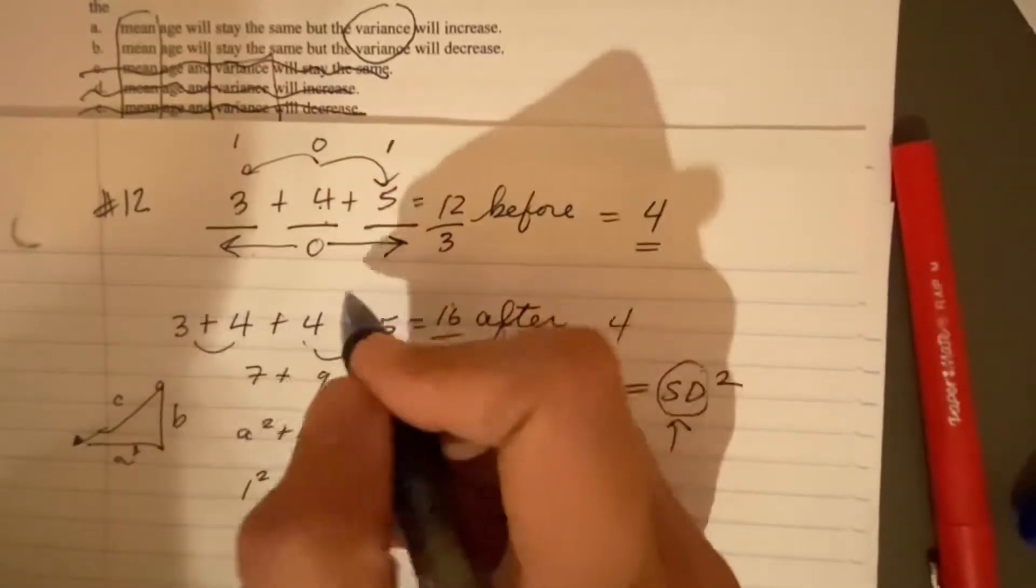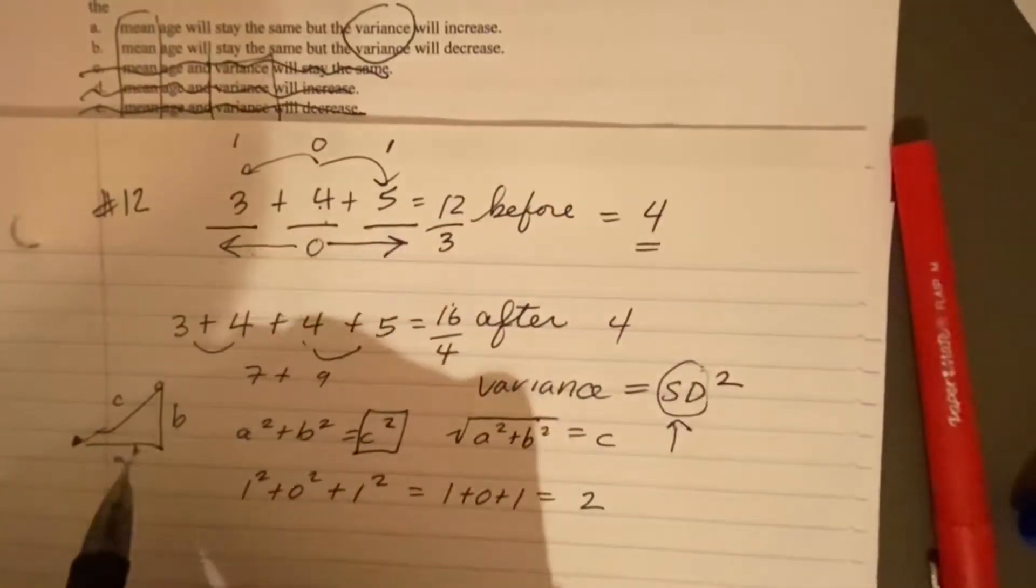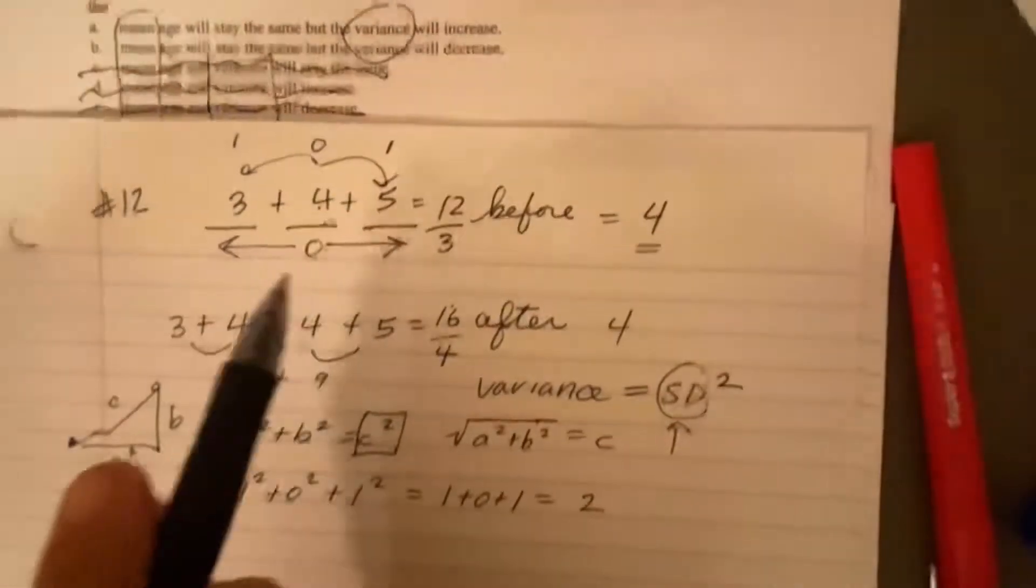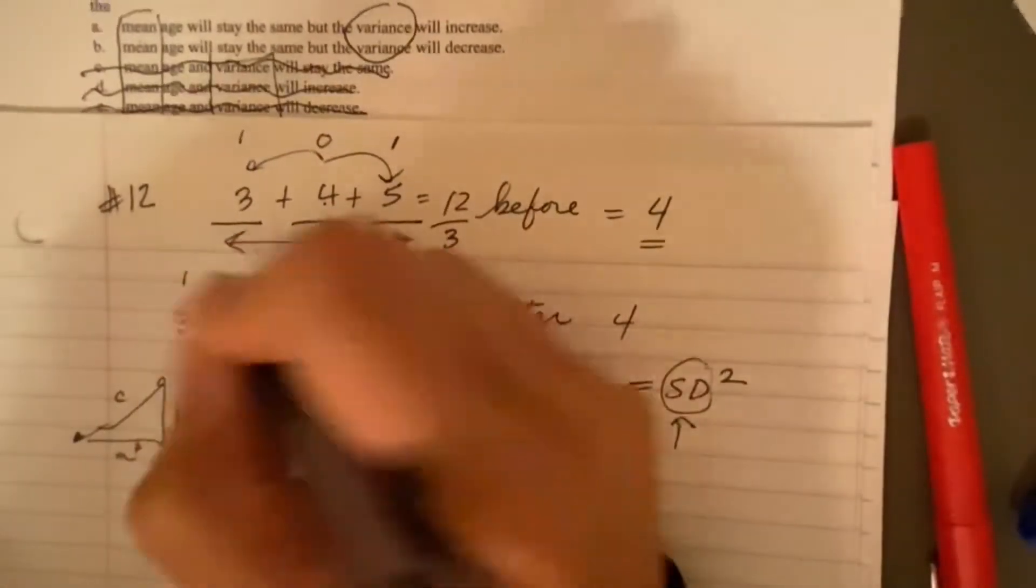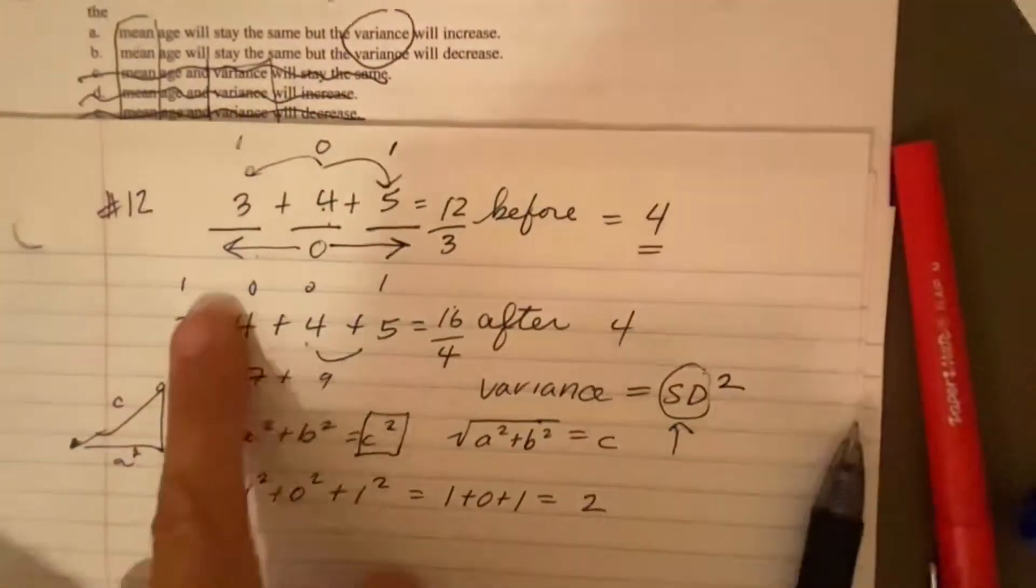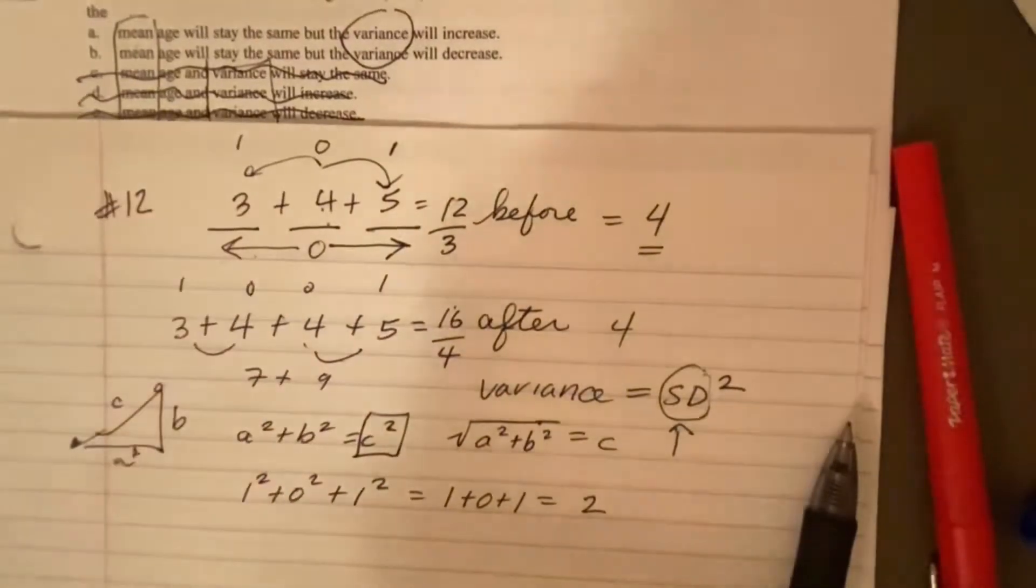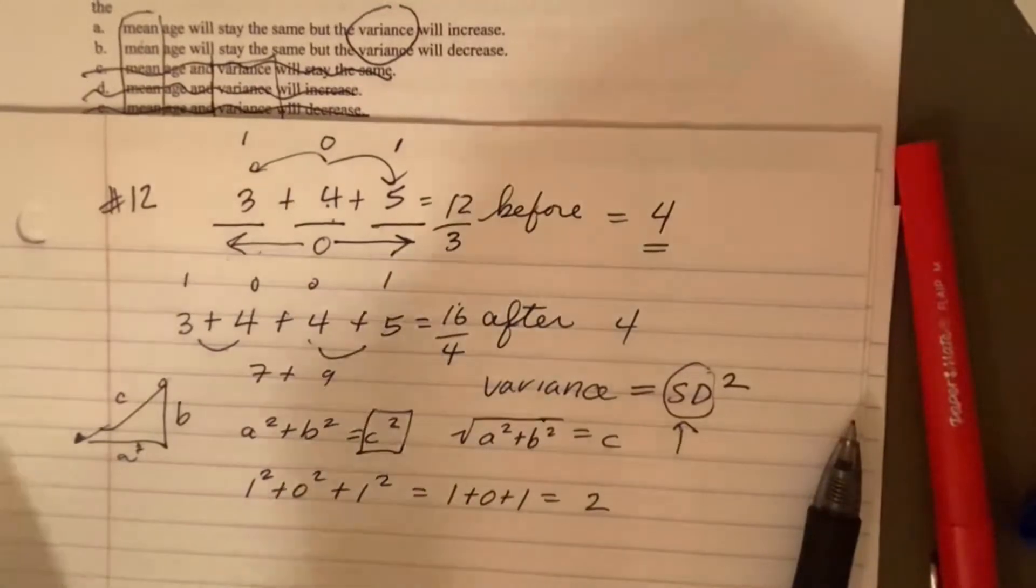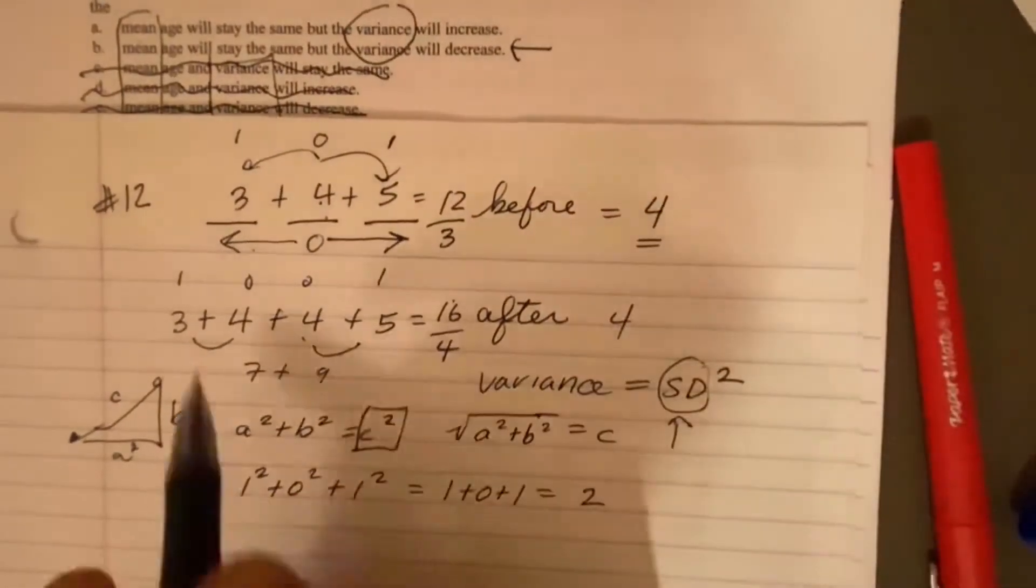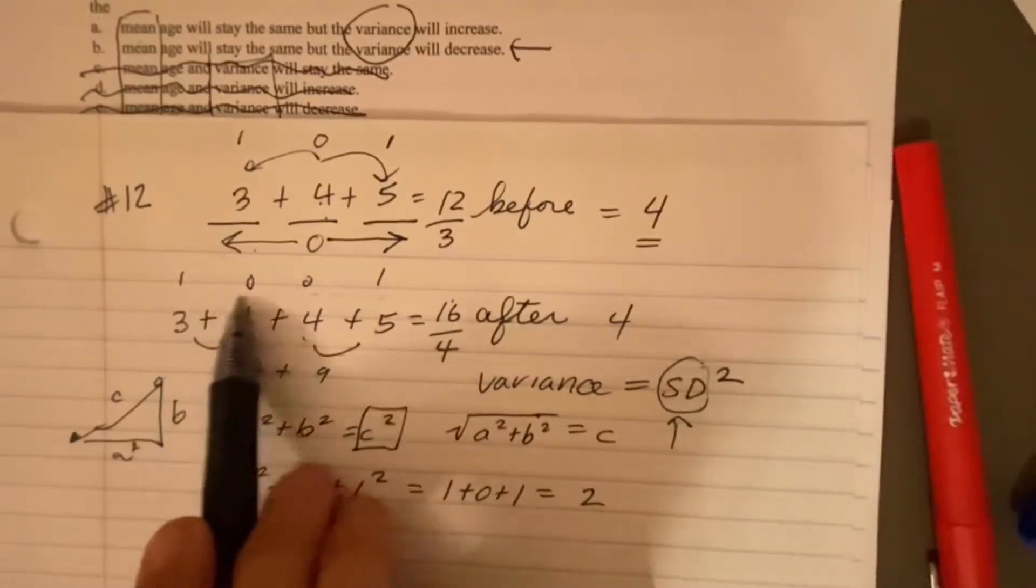So notice this one, the average amount the number is away from the mean. You have two that are right on the mean and two that are off the mean. So you actually have more that are on the mean now than you had before. Really interesting here, right? So the answer to 12 is B, the variance will decrease.